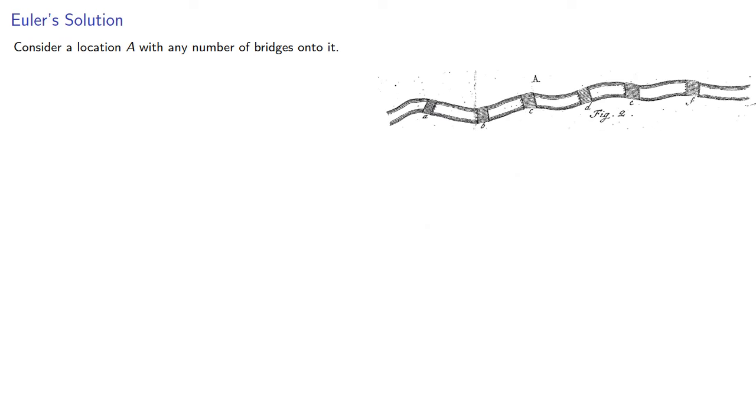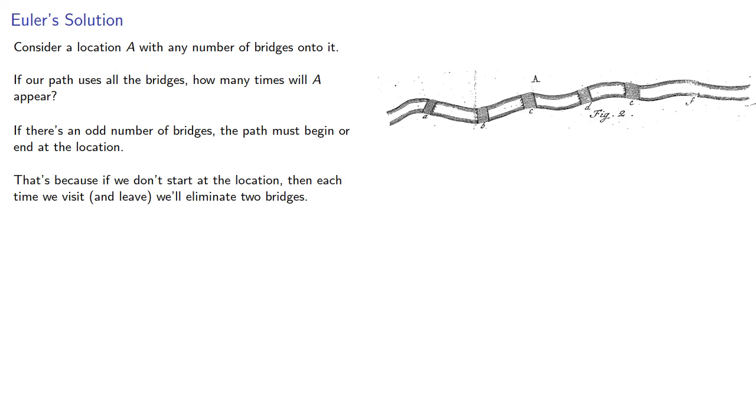So consider a location A with any number of bridges onto it. If our path uses all the bridges, how many times will this location A appear? Now if there's an odd number of bridges, then the trail must begin or end at the location. That's because if we don't start at the location, then each time we visit and leave, we'll eliminate two bridges, eventually we'll take the last bridge in, and be unable to leave.